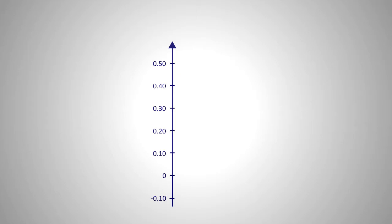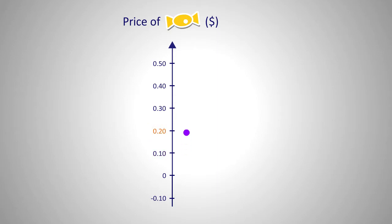Let's look at the vertical number line. Let this be the price of sweets. Suppose the price of a sweet is 10 cents — how do we express this on the number line? Draw a dot here. The price of a sweet is now 20 cents — a dot here. 30 cents — a dot here. You get the idea.